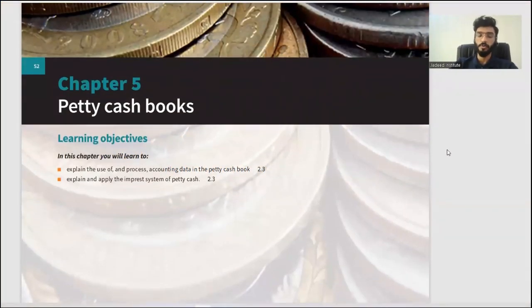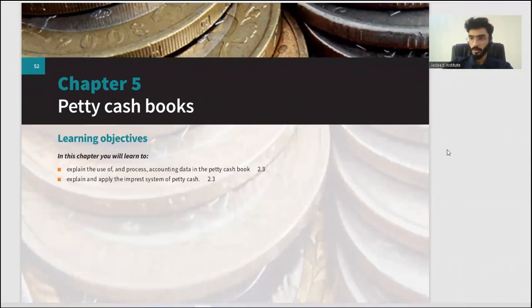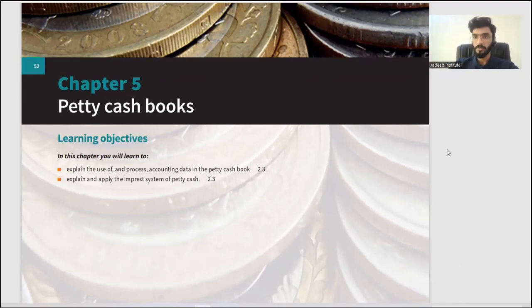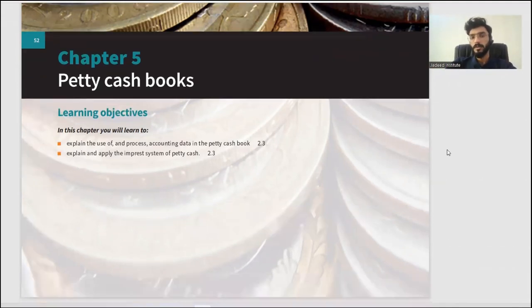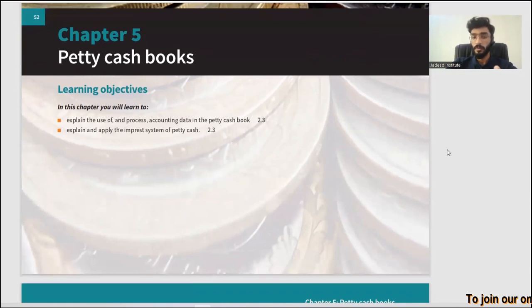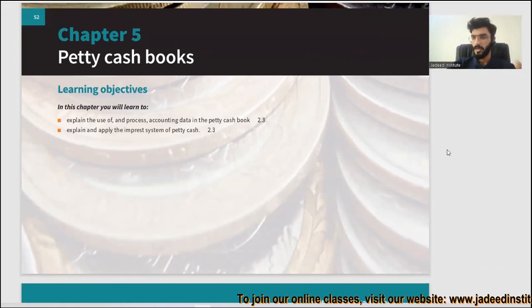Chapter five: petty cash book. We've already done the cash book. Petty cash book is basically a mini cash book — it is used for petty, meaning small, amounts. We'll be using the petty cash book instead of the main cash book we learned about in previous classes. In this chapter we'll explain the use of and process accounting data in the petty cash book.